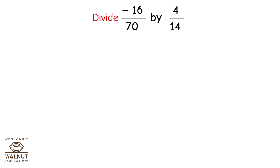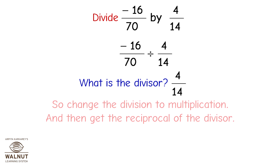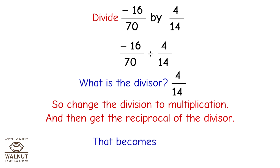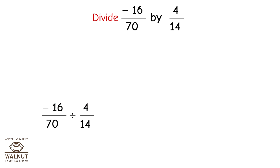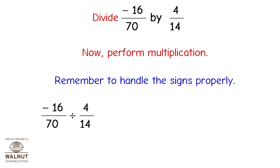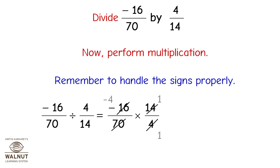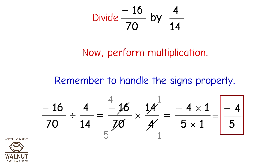Divide (-16)/70 by 4/14. The divisor is 4/14, so change the division to multiplication and take the reciprocal: 14/4. Remember to handle the signs properly. (-16)/70 ÷ 4/14 = (-16)/70 × 14/4 = (-4×1)/(5×1) = -4/5.